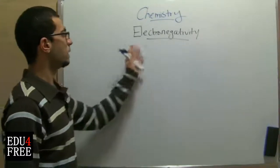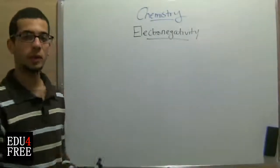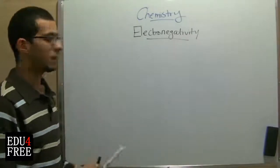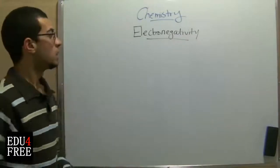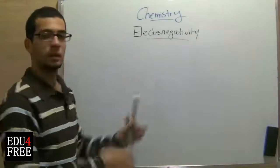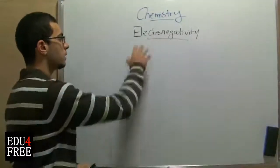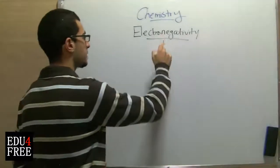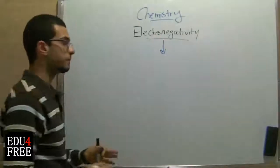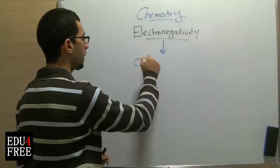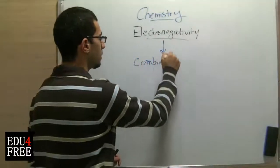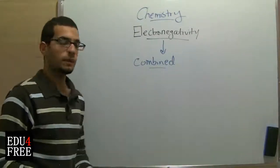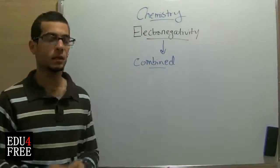Now, the electronegativity is the tendency or the ability of the atom to attract electrons in the chemical bond to itself. Since we mentioned the chemical bond, we can conclude that the electronegativity expresses the ability of the atom in the combined state, involved with another atom. While the electron affinity expresses the state of the atom in the single state.